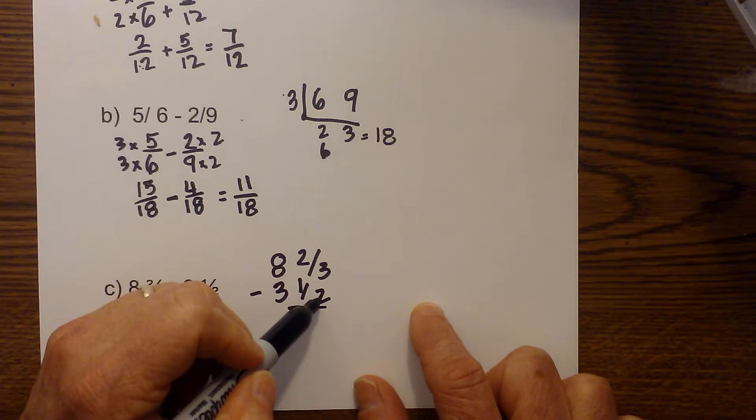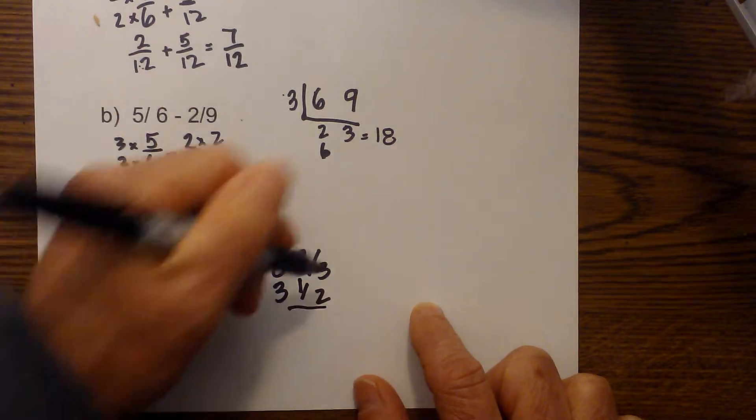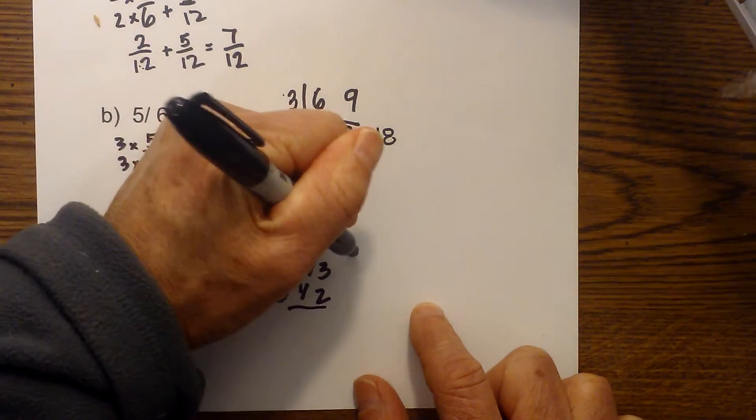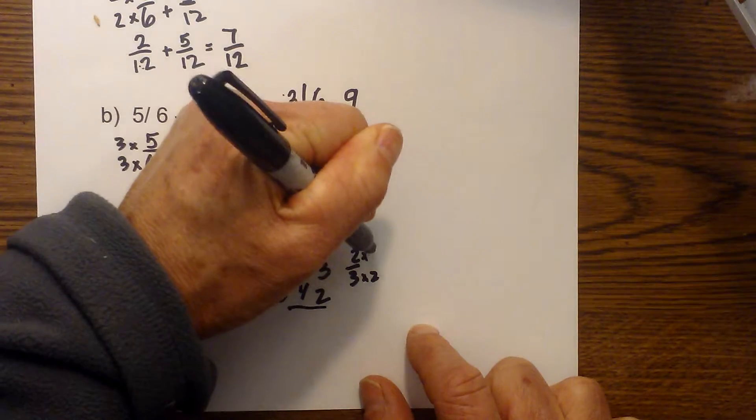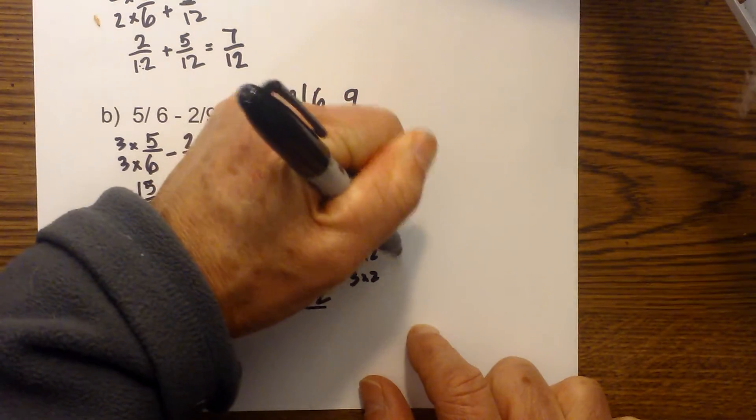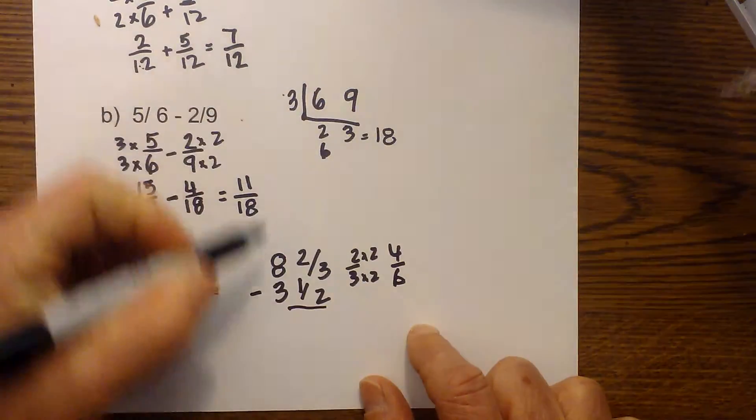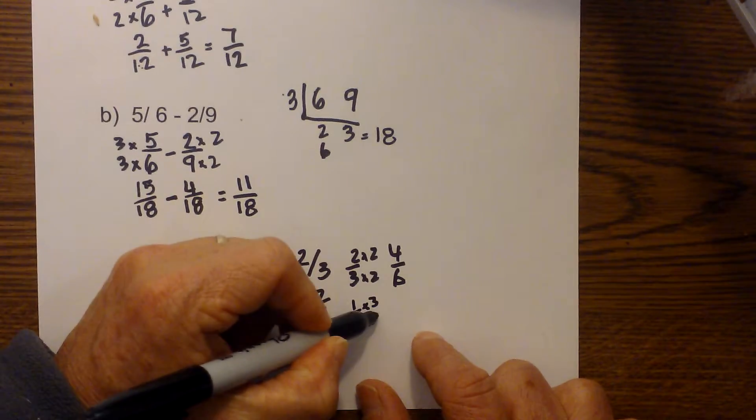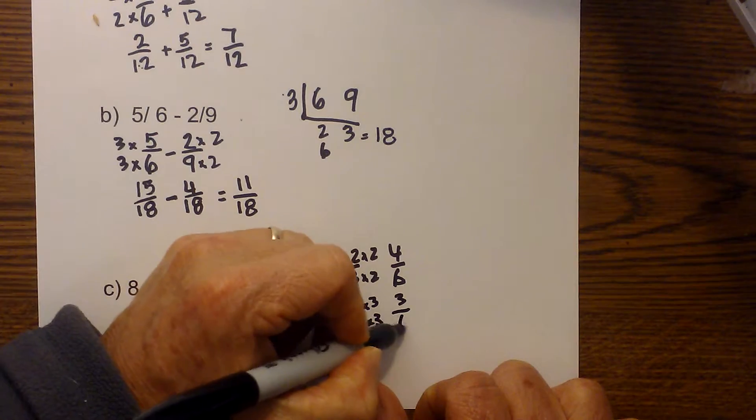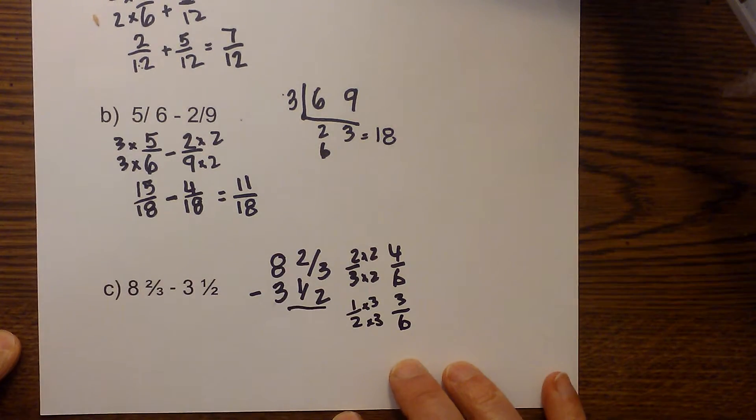And I know both of these will go into six. So six is our common denominator. So we have two over three times two, and this times two. And so that will be four over six. And then one half times three times three is equal to three over six.